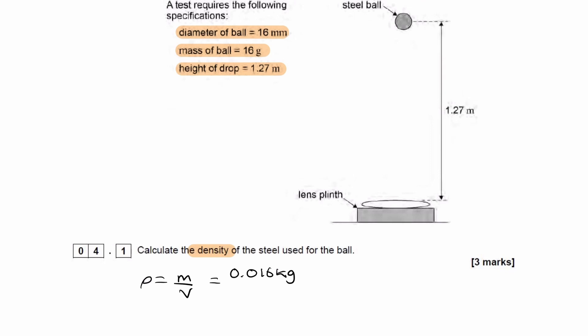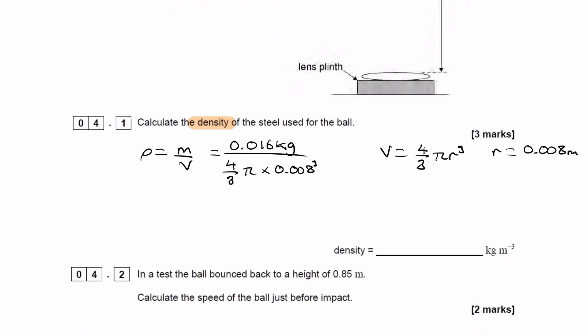The volume, so this is a sphere. Volume of a sphere is 4/3 π r³, the radius would be 0.008 meters. So that's just dividing this by 2 and then dividing it by 1,000. So then we can put this in. So our volume would then be 4/3 π times r³, so 0.008³, and that gives us 7.460.